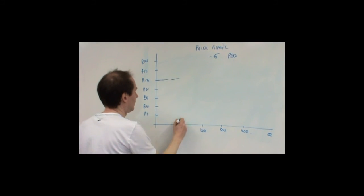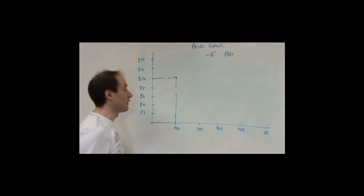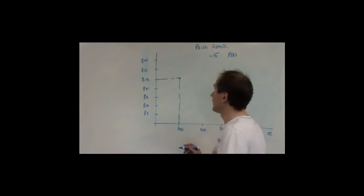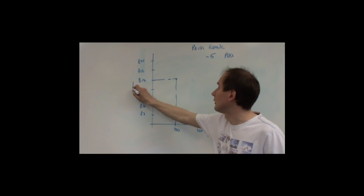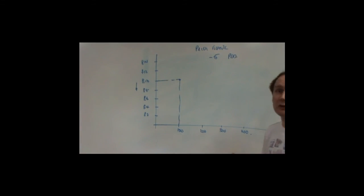A 10% change in price is going to lead to a 50% change in demand. Let's imagine then that we're starting with a price of £10, quantity of 100 units. Let's suppose that price falls to £8. That's a 20% fall in price.